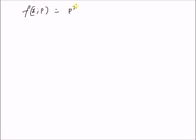So, given the Bernoulli distribution as f of x with the parameter p equal to p^x times (1-p)^(1-x), where x is either 0 or 1, and the distribution is 0 everywhere else.